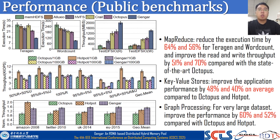In KV store workloads, Gengar improves application performance by 48% and 40% on average compared with Octopus and Hotpot. In graph processing, for very large datasets, Gengar improves performance by 60% and 52% compared with Octopus and Hotpot.